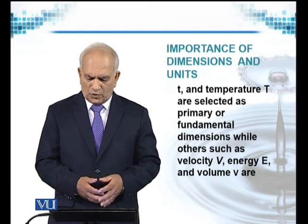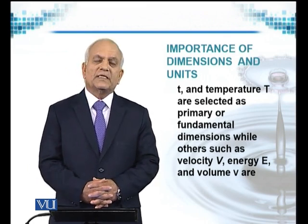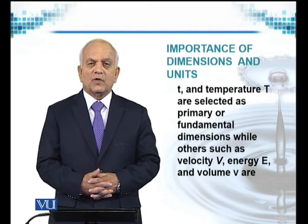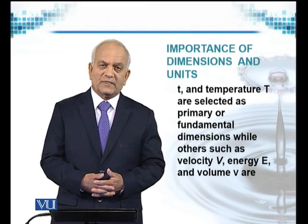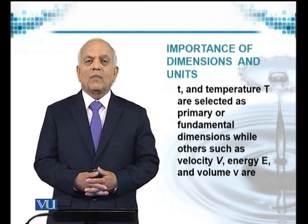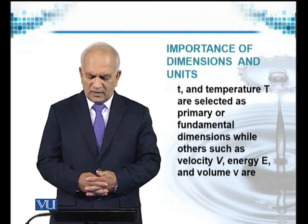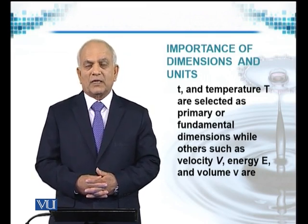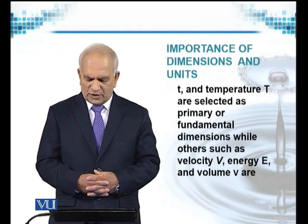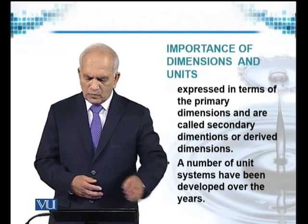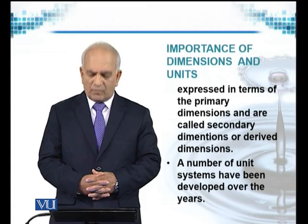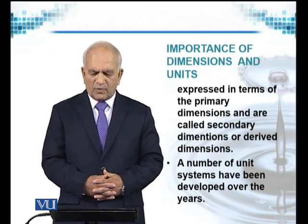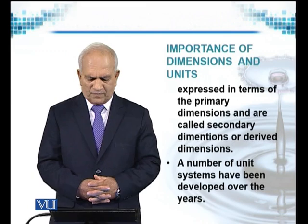Such as velocity — velocity is the ratio of the distance covered in time. If the total distance is x, which is some length, we divide it by t, we get velocity. So velocity is derived from length and time, and therefore we call it dependent on the fundamental dimensions. Similarly for energy and for volume — they are expressed in terms of primary dimensions and are called secondary or derived dimensions. A number of unit systems have been developed over the years.